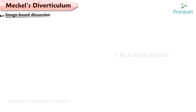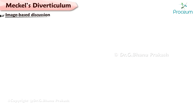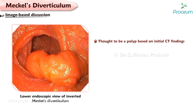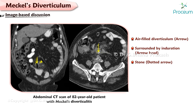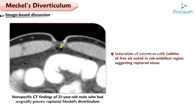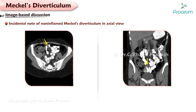Image-based discussion. Here is an image of an asymptomatic Meckel's Diverticulum found during an open abdominal wall reconstruction. This is a lower endoscopic view of an inverted Meckel's Diverticulum — this lesion was initially thought to be a polyp based on CT findings but was later confirmed to be a Meckel's Diverticulum on diagnostic laparoscopy. An abdominal CT scan of an 82-year-old patient with Meckel's diverticulitis demonstrates an air-filled diverticulum surrounded by significant induration with a stone within the diverticulum. A 21-year-old male had a surgically proven ruptured Meckel's Diverticulum; nonspecific CT findings include induration of the omentum with bubbles of free air in the sub-umbilical region, suggesting a ruptured viscus. Incidental non-inflamed Meckel's Diverticulum shown in axial view (image A) and coronal reconstruction (image B) of the abdominal CT scan.